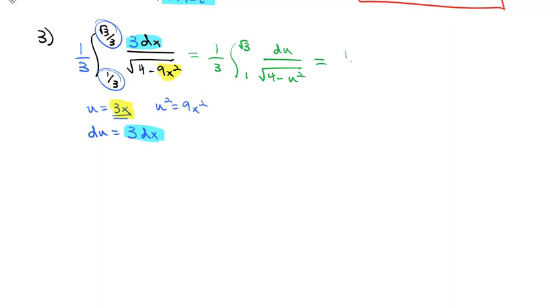So we end up with 1/3 times, this is the sine inverse of u over 2, because we divide by whatever squared, whatever that a squared is. 2 squared is 4, integrated from 1 to the square root of 3.